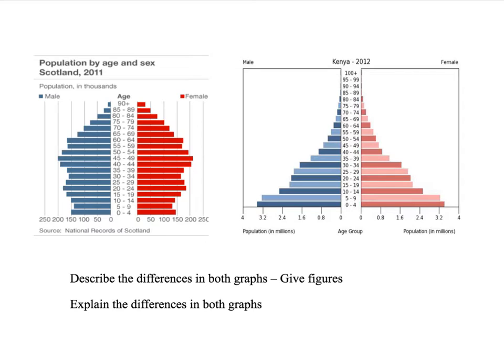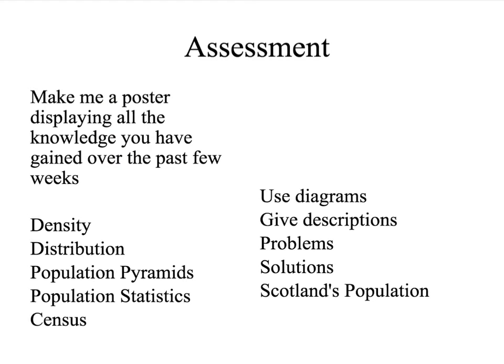Then I want you to explain the differences in both graphs, linking back to the population growth video — why are there fewer young people here than there? Why are there fewer old people here than there? What are the reasons these population pyramids look the way they do? For an assessment covering all lessons so far, including population census content, make a poster or report — you can do it any way you want. I want you to cover density, distribution, population pyramids, population statistics, and the census. Use diagrams, give descriptions, identify problems and solutions, and talk about Scotland's population from the pyramids and your own research.